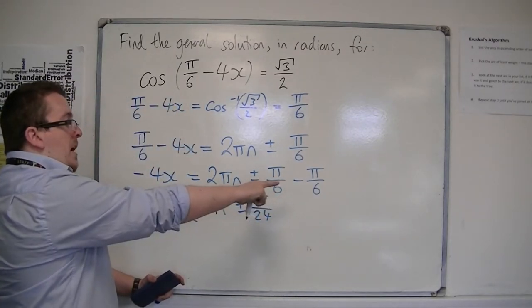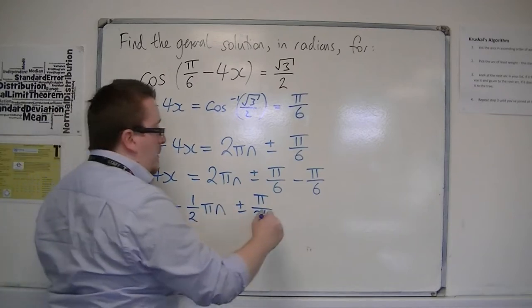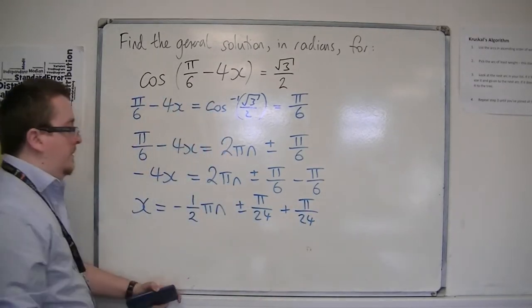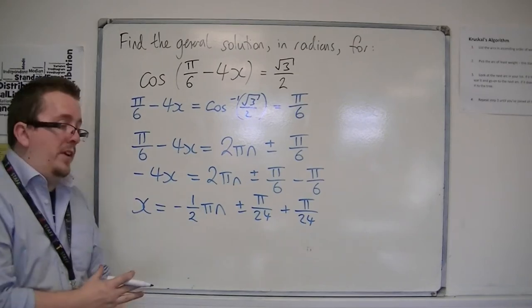And then dividing minus pi over 6 by minus 4, I'm going to get plus pi over 24. So I could write my answer like that.